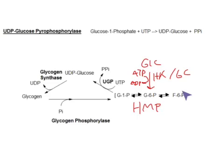Glucose directly enters into the hexose monophosphate pathway. Fructose 6-phosphate goes into glycolysis using the PFK1 enzyme, which also uses ATP.